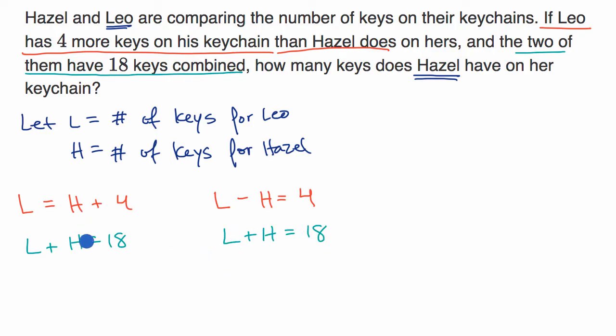Now we have two equations with two unknowns, and there are two ways we could approach them. When I look at this system of equations on the left, where I've already solved for L, substitution feels really valuable. Because we know L = H + 4, so if I substitute H + 4 in for L, then I have one equation with one unknown.